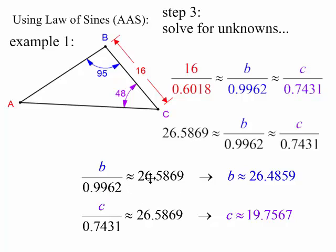If you multiply both sides of this equation by 0.9962, you get this answer. And for C here, if we multiply both sides by 0.7431, then you get this answer here, where C is 19.7567. That one's done.